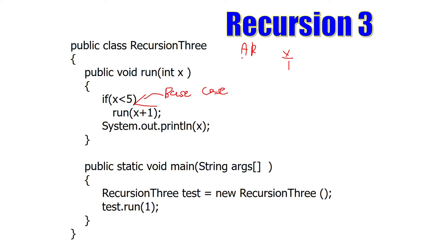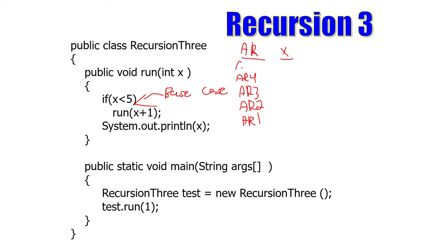I'll explain what the AR stack is in a minute. AR calls work like this — you have multiple different steps to them: AR call 1, AR call 2, AR 3, AR 4, AR 5. You don't know how many you're going to have, so we'll just have 5 for now. On the first time through, AR1 will be passed 1. Then you will run the run method again with x plus 1. What is 1 plus 1? 2.